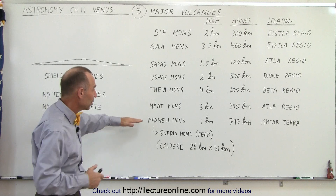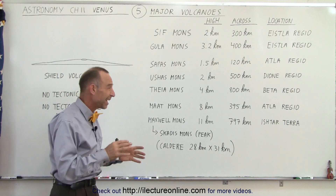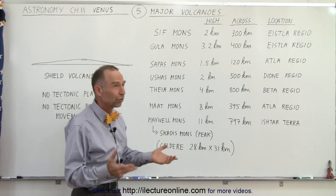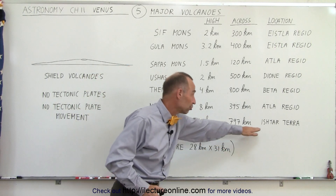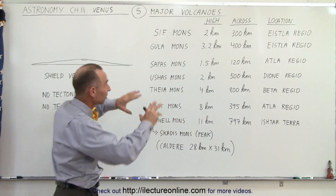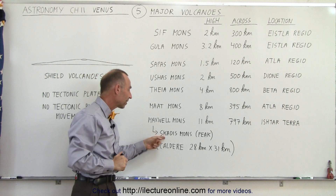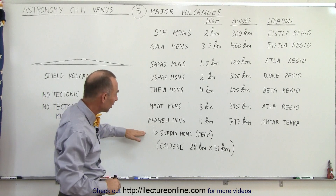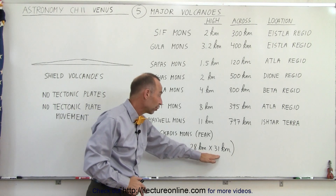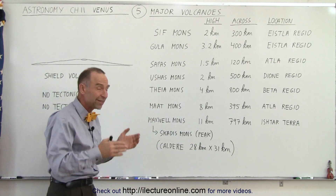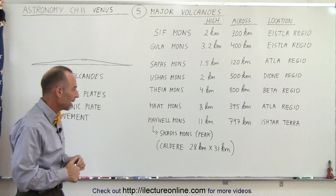The tallest mountain region on the planet Venus is Maxwell Mons, with a height of 11 kilometers — about 6.5 miles, putting you somewhere around 35,000 feet. It's 800 kilometers across, about 500 miles across, a huge mountain range in the Ishtar Terra region — that northern region that looks like a large land mass. One of its peaks, Gadis Mons, is indeed the tallest mountain, and at its top there's a caldera 28 kilometers by 31 kilometers — about 20 miles by 20 miles — a huge summit caldera where the lava used to come out when the mountain was active.